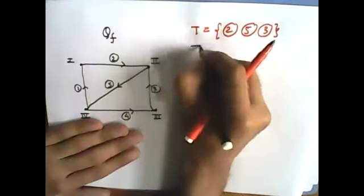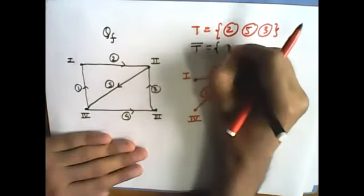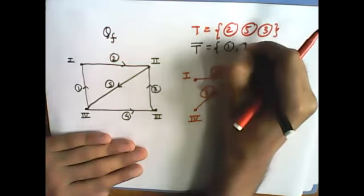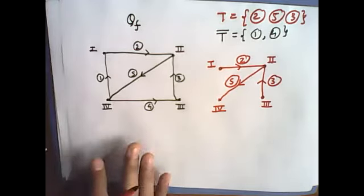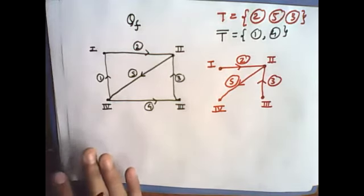Then, T bar will be what? The co-tree will be 1 and 4. Now, I told you that if you want to find out F cut-sets, then we have F cut-set equation written.